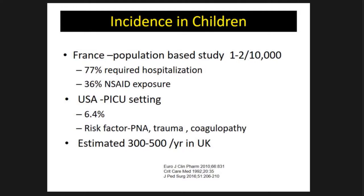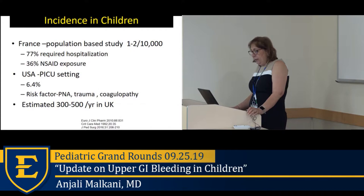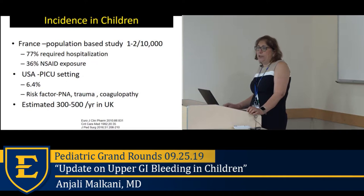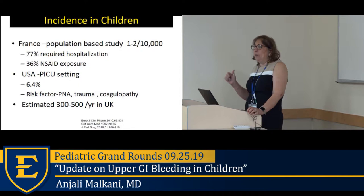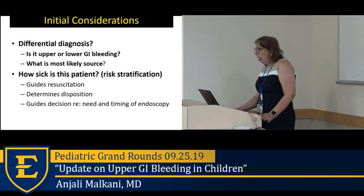There's not much information on the incidence of upper GI bleeding in children. A population-based study in France reported an incidence of 1 to 2 per 10,000 children; 77% required hospitalization and about a third had NSAID exposure. A US study in PICU patients found an incidence of 6.4%, with risk factors including pneumonia, trauma, and coagulopathy. A UK study estimated 300 to 500 kids per year — about 0.5% of children — have an upper GI bleed, so it's quite rare.